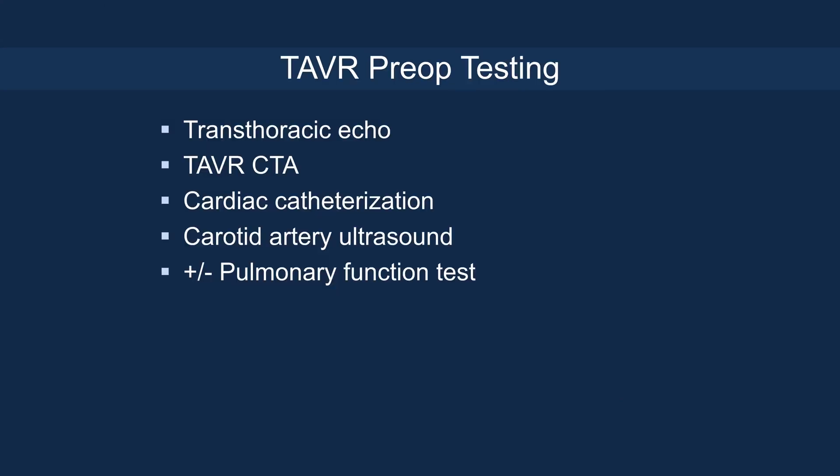In terms of pre-op testing, the fundamentals include a transthoracic echo to demonstrate severity of aortic stenosis, a TAVR CT angiogram to look at anatomy and feasibility of TAVR, cardiac catheterization to rule out obstructive coronary artery disease, carotid ultrasound to look at obstructive carotid artery disease, and pulmonary function test to look at pulmonary risks in terms of TAVR.